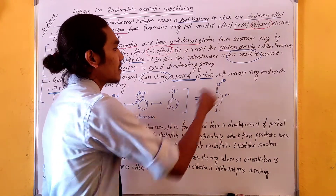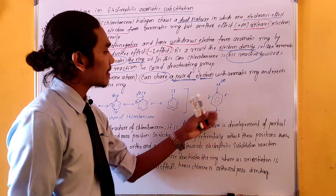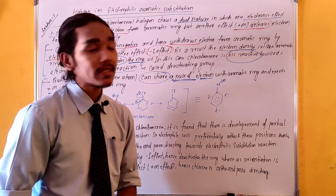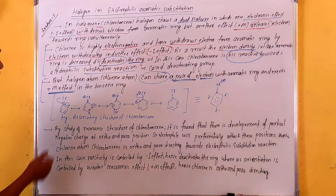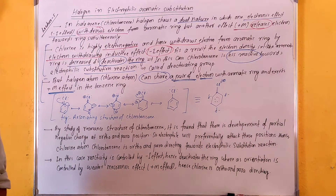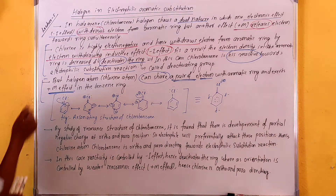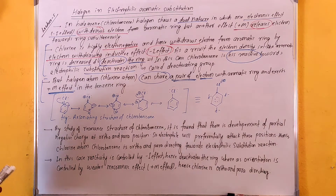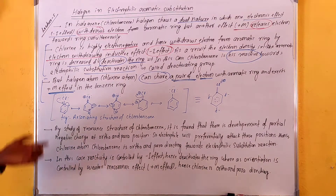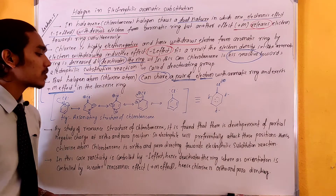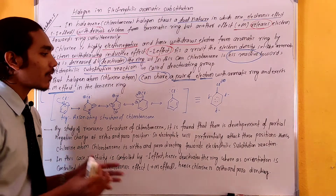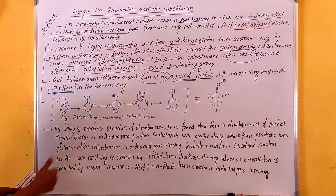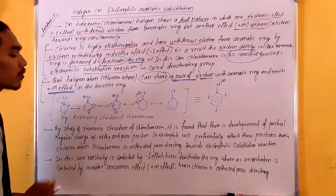We need to draw the resonance hybrid structure, which shows partial positive and partial negative charges. By studying the resonance structure of chlorobenzene, it is found that there is development of partial negative charge at the ortho and para positions.